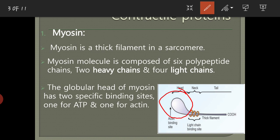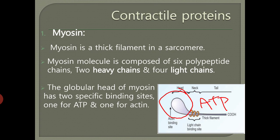Myosin has a globular head which is the binding site for actin. The globular head of myosin has two specific binding sites: one for ATP, where it binds to ATP, and another that goes and binds to the actin filament. So myosin is a thick filament composed of two heavy chains and four light chains, with a globular head having these two specific binding sites.